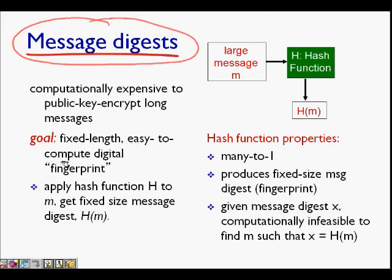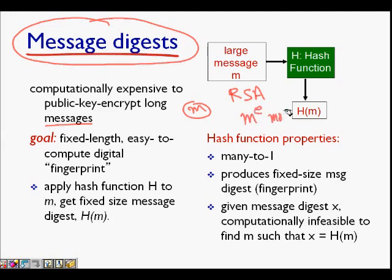There is a way out using message digest. It is computationally expensive to public-key-encrypt a long message. We saw in the RSA algorithm that we had to do a lot of exponentiation — M to the power of E modulo N — and this exponentiation with large prime numbers is quite costly. So we don't want to encrypt a very long message with a public key.